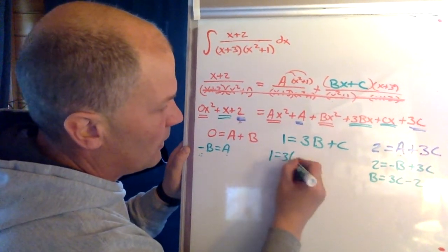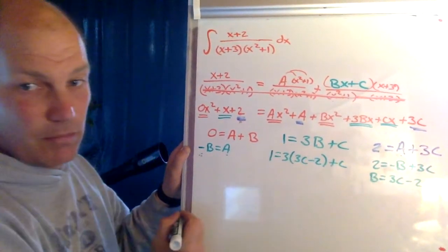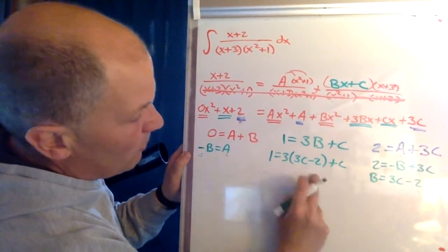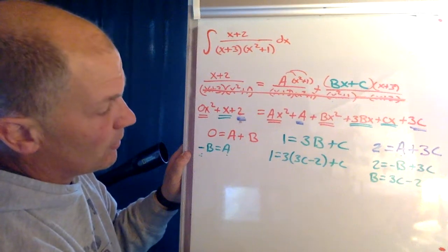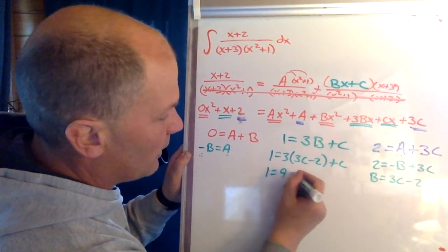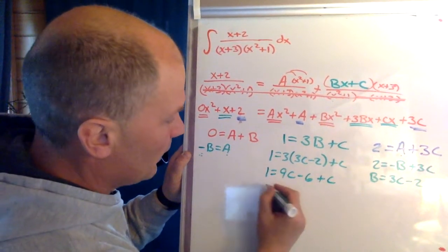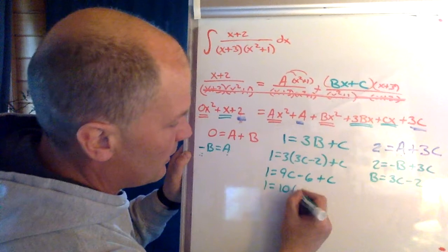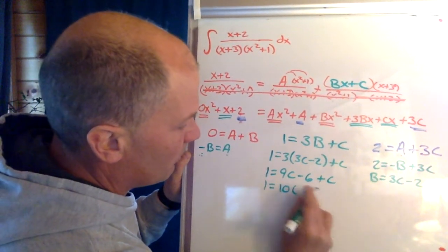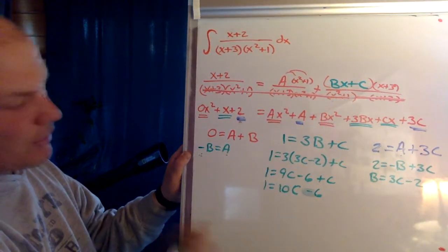Okay, now I got 3c minus 2 is b. I can bring it over here, bring this for b. So one is the same as three times 3c minus 2 plus c. Now I've got my one equation with the c's. Distribute: one equals 9c minus 6 plus c. One is 10c minus 6.